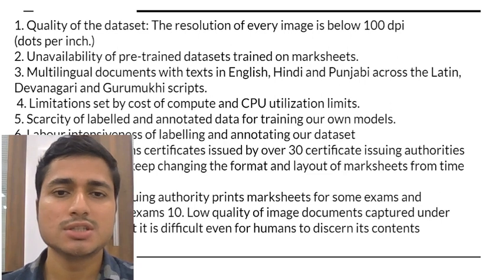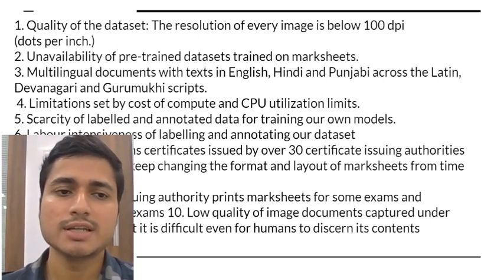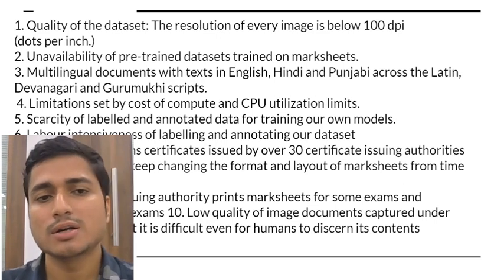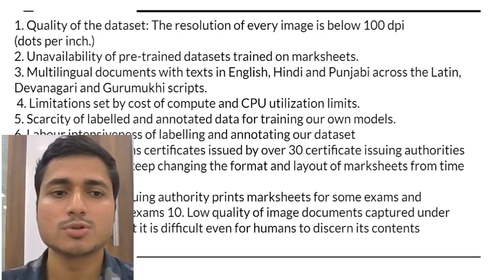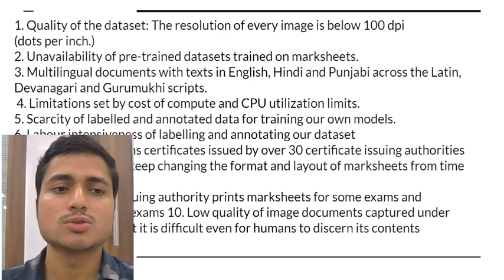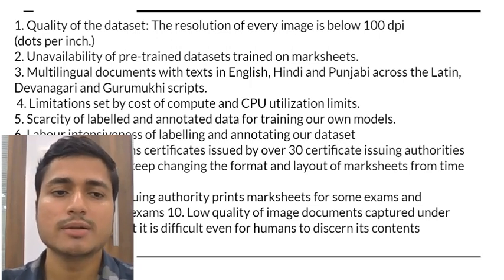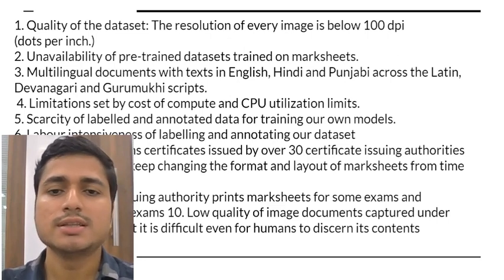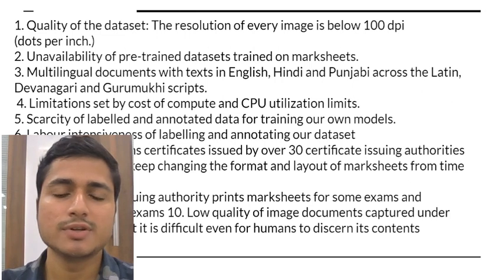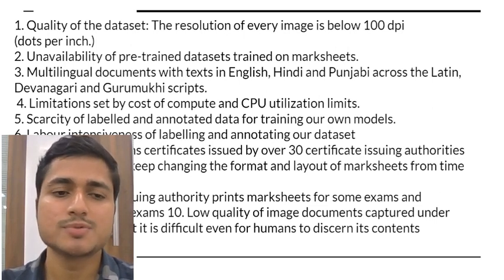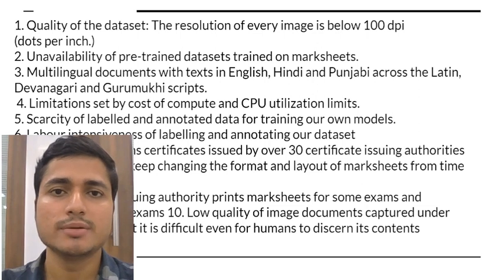Further challenges included computational and CPU utilization cost, and scarcity of labeled and annotated data when training the model — since annotation is a manual process. There were also over 30 certificate-issuing authorities, each with their own pattern for issuing mark sheets, and the layout and format changes every 4 to 5 years. Additionally, if a mark sheet is captured in poor lighting conditions with shadows, it is difficult even for humans to label it correctly.